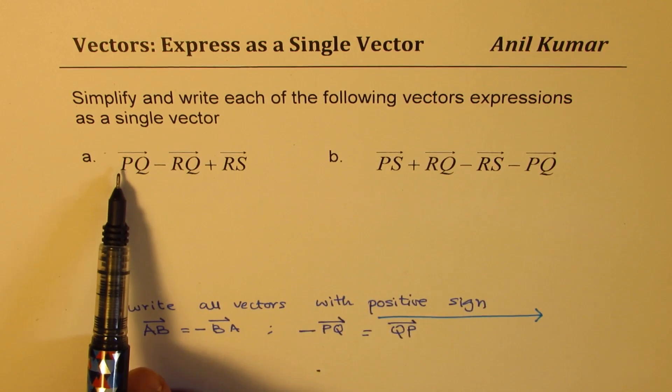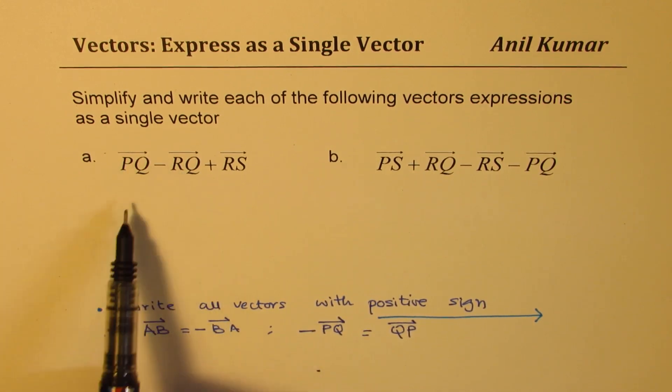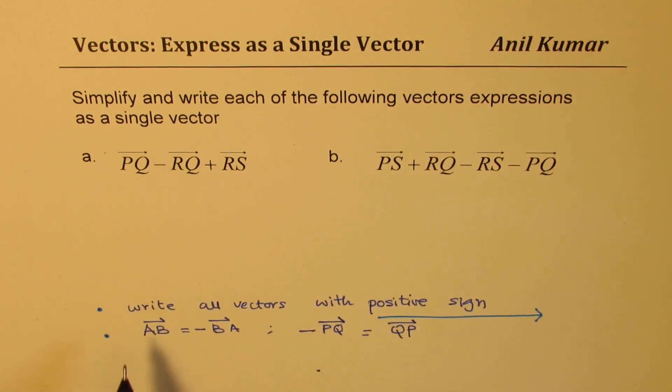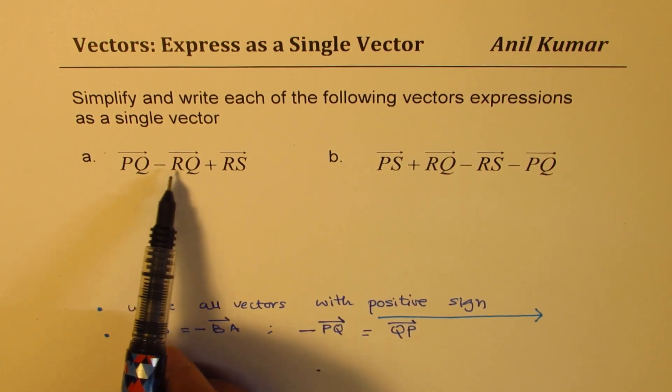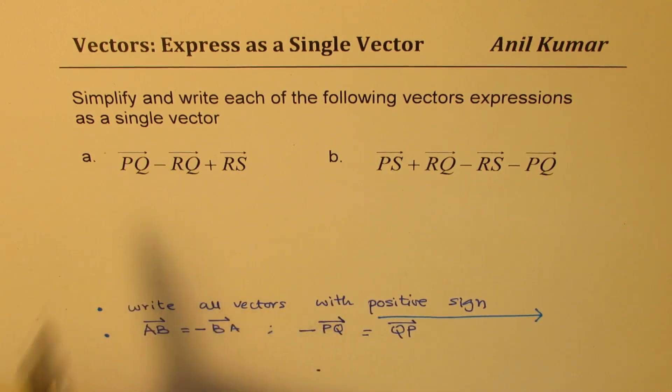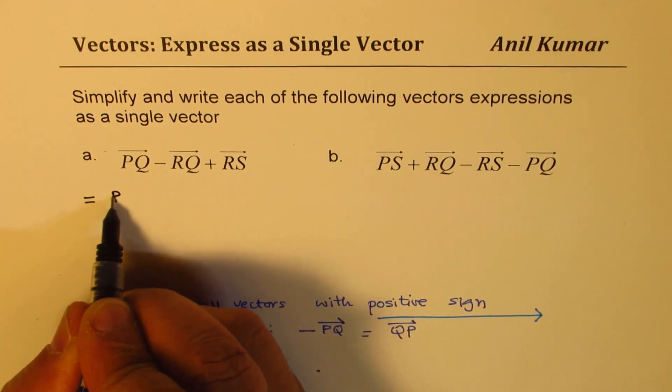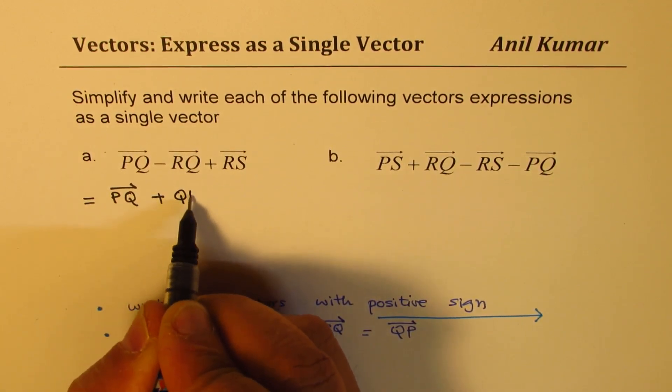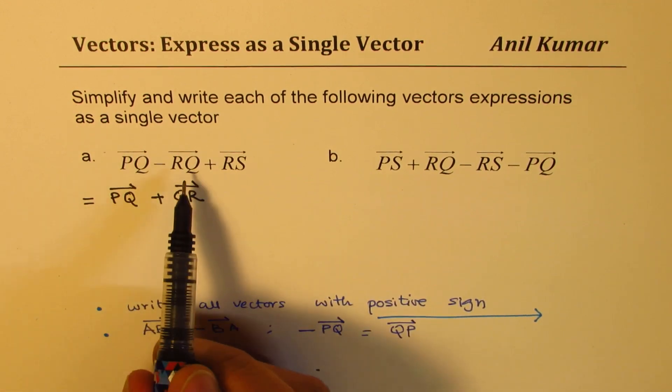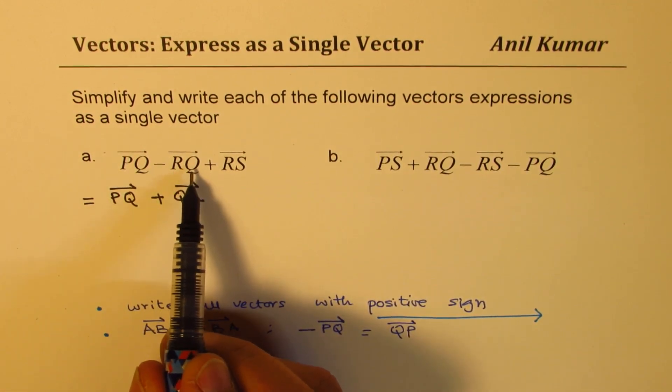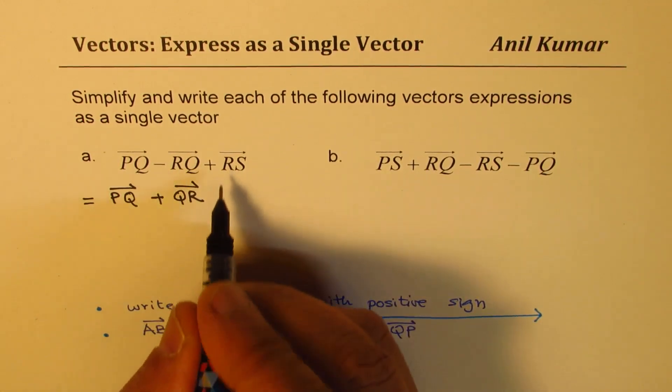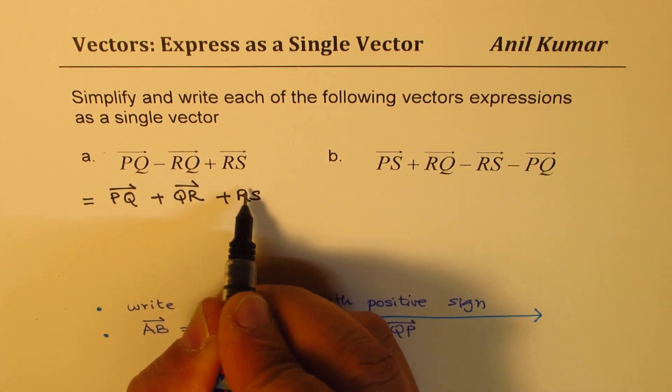A, from P to Q, so this vector is from P to Q, then from R to Q and R to S. That is how you have to understand. So first step here is to write all vectors with positive sign. We have a vector here with negative sign, negative RQ. So I'll reverse this and make it positive. So I could write this vector as PQ plus QR. So what have I done here? I have changed the sign. From RQ, I made it QR, so it becomes negative of whatever it was. So I have a positive sign.